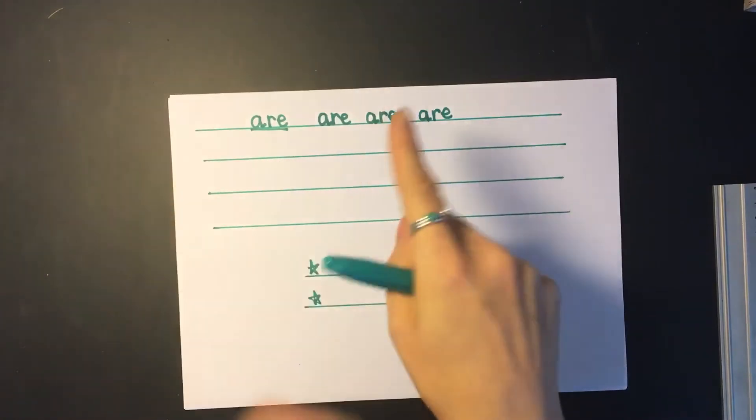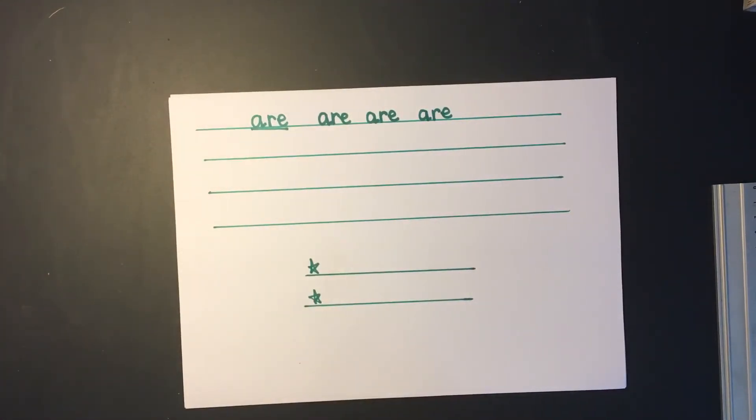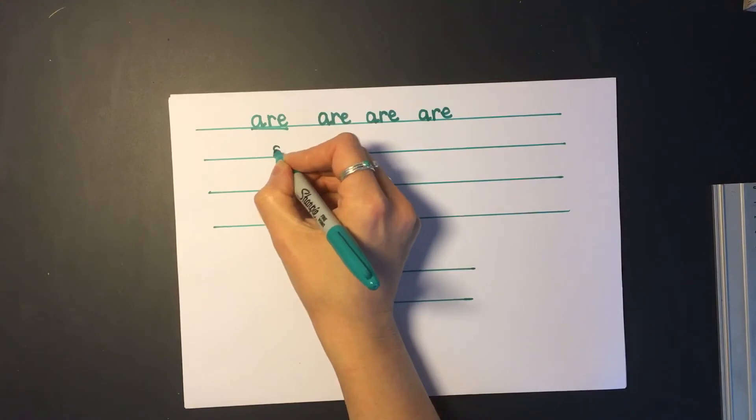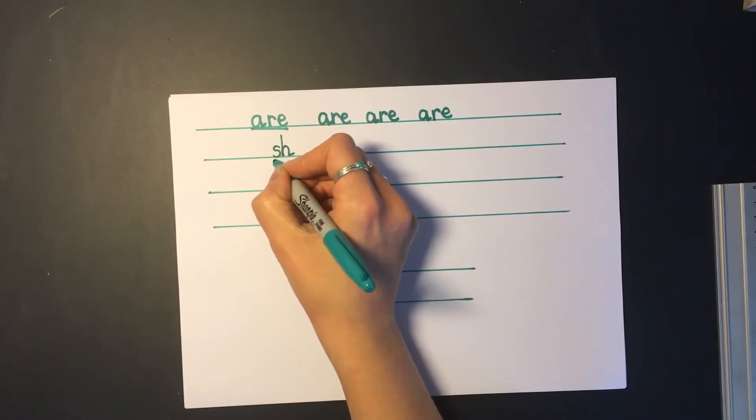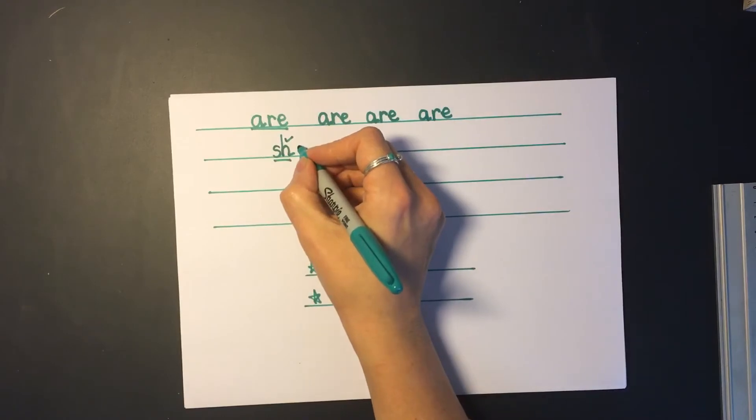Sh, air, share. Write them for me now. Okay shall we mark it? If you got S and H together special friends for your sh, give it a tick. Then air sound how do we spell it? A-R-E. Well done.